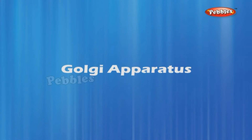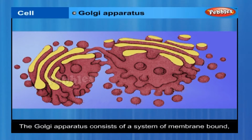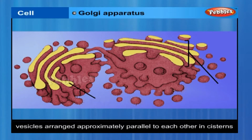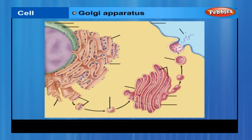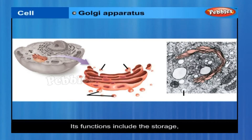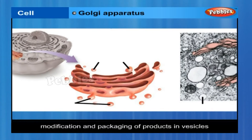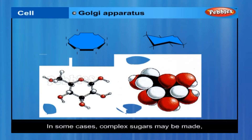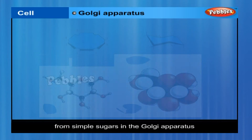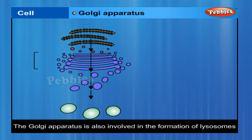The Golgi Apparatus consists of a system of membrane-bound vesicles arranged approximately parallel to each other in stacks called cisterns. These membranes often have connections with the membranes of the ER and constitute another portion of a complex cellular membrane system. Its functions include the storage, modification and packaging of products in vesicles. In some cases, complex sugars may be made from simple sugars in the Golgi Apparatus, which is also involved in the formation of lysosomes.